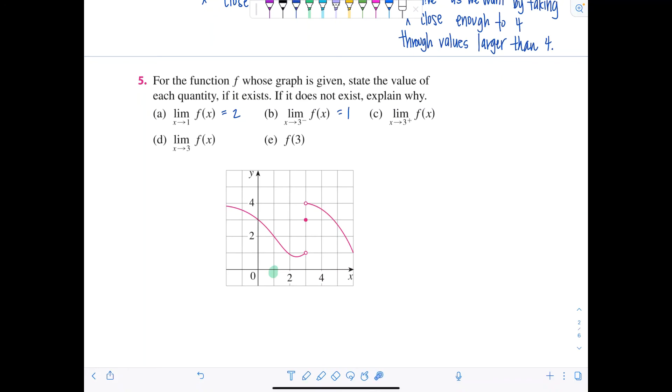And then notice in part c, now they want us to do the limit as x approaches 3 from the right. So here's 3, but if we're coming from the right side of 3, we're coming this way along the graph. Doo-dee-doo-dee-doo. And where are you tending towards? What y value are you heading towards? 4. Okay, so this limit is equal to 4.